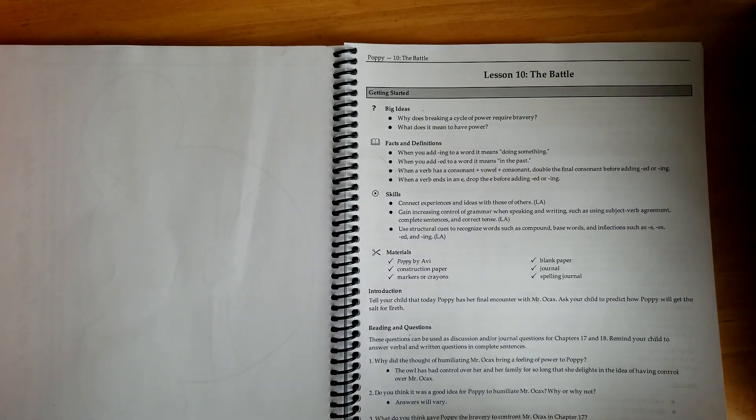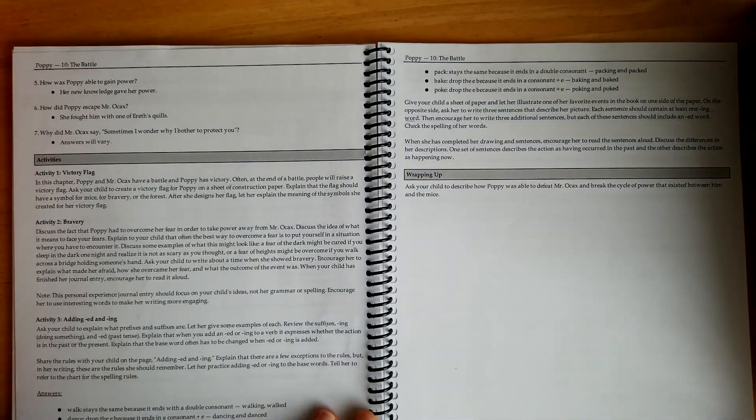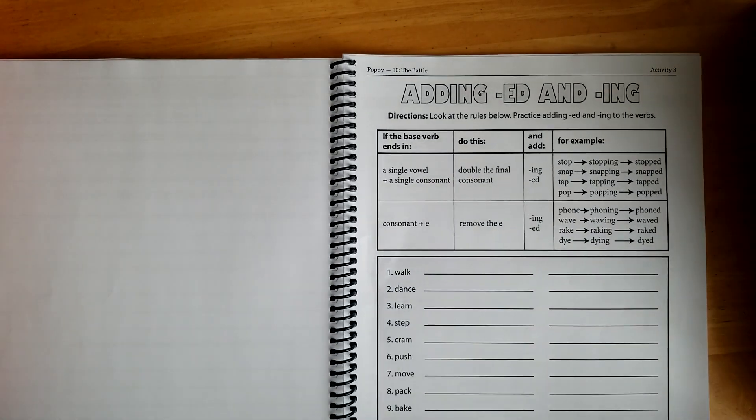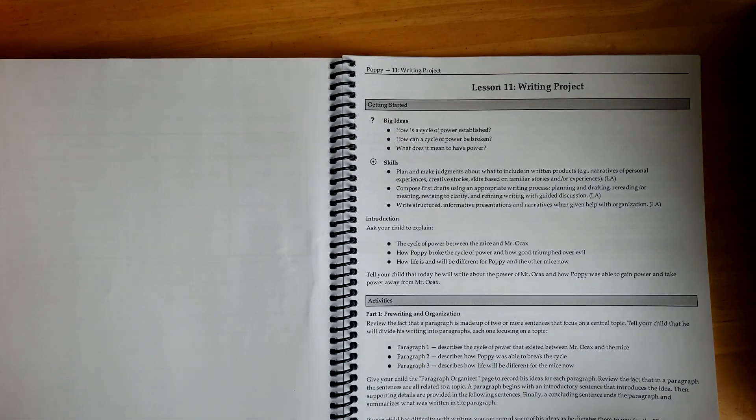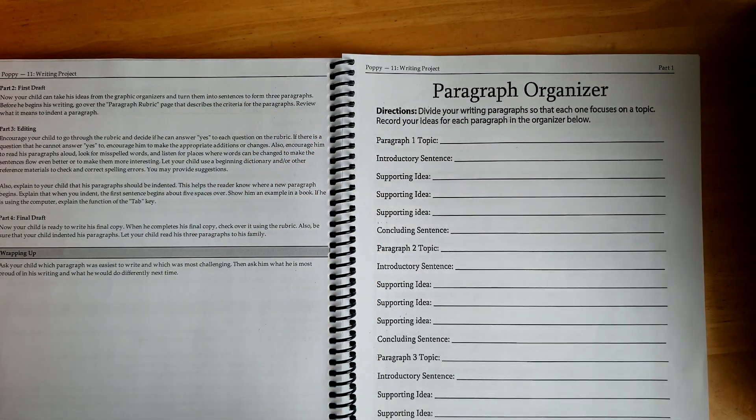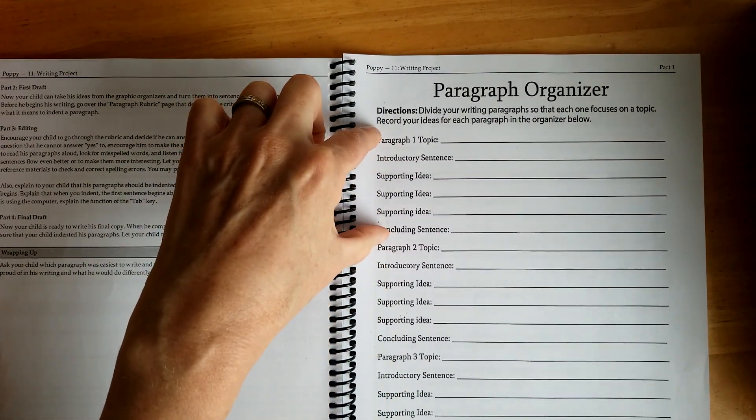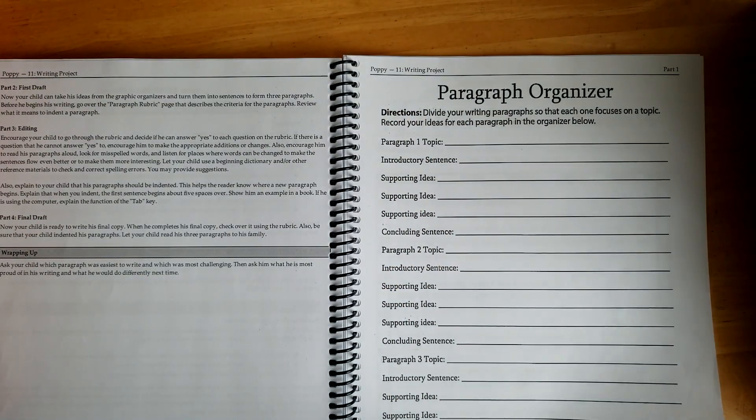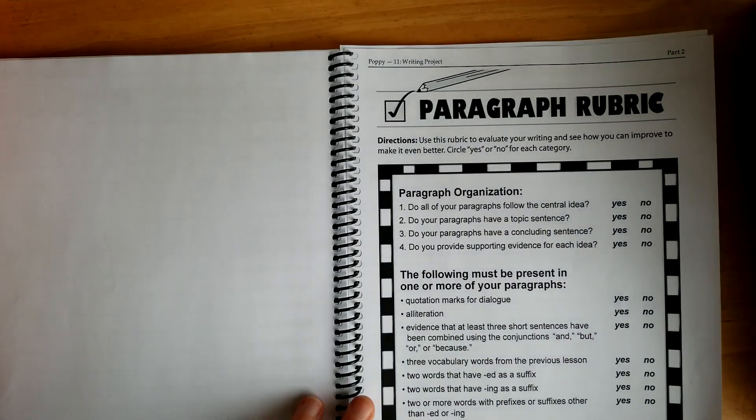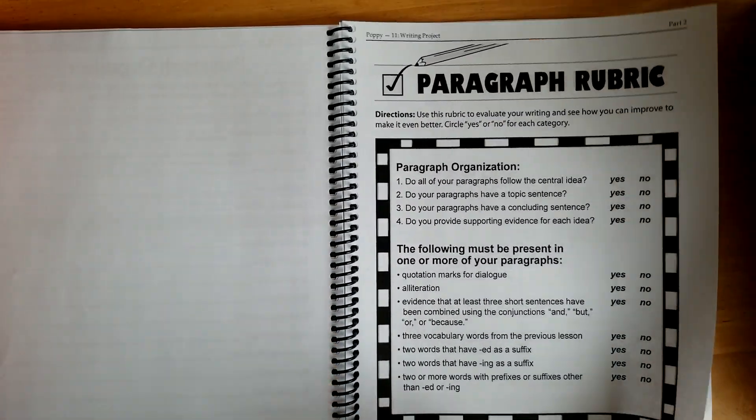This is the battle. This is the last chapter, I think. You can see what's going on here. More questions. Adding e-d-i-n-g. And then a writing project. Paragraph organizer - paragraph one, paragraph two, paragraph three. This was a good way for her to get her thoughts out on paper. Good graphic organizer, maybe. I'm not sure if that's what it's called, but that worked for her. And then she was able to look at this paragraph rubric and go and correct her paper.